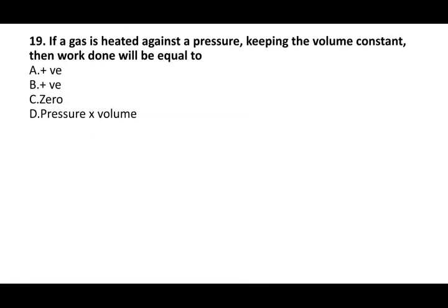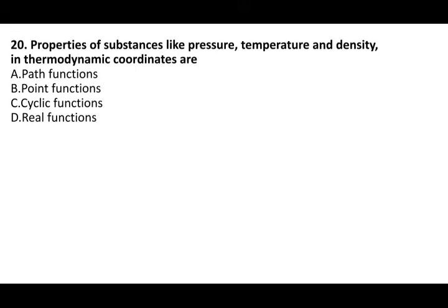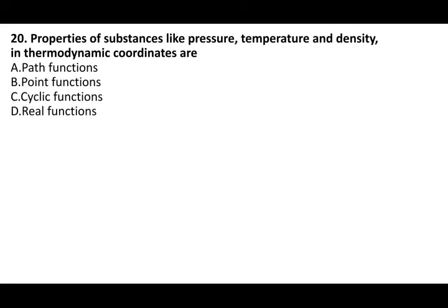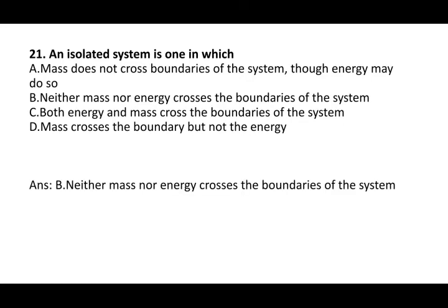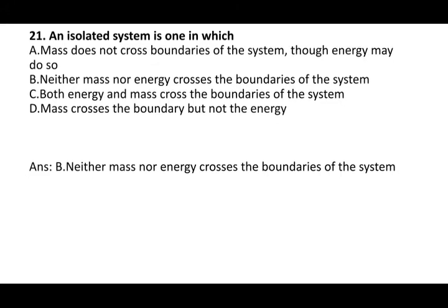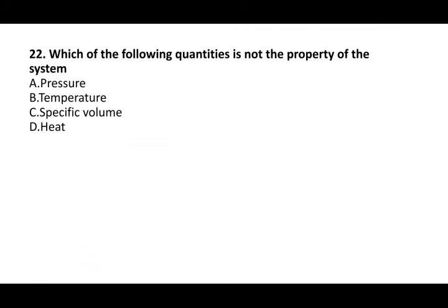Next question: if a gas is heated against a pressure keeping volume constant, then work done will be equal to zero. Next question: properties of a substance like pressure, temperature, and density in thermodynamic coordinates are point functions. Next question: an isolated system is one in which neither mass nor energy crosses the boundary of the system. Next question: which of the following quantities is not a property of the system? The answer is heat.